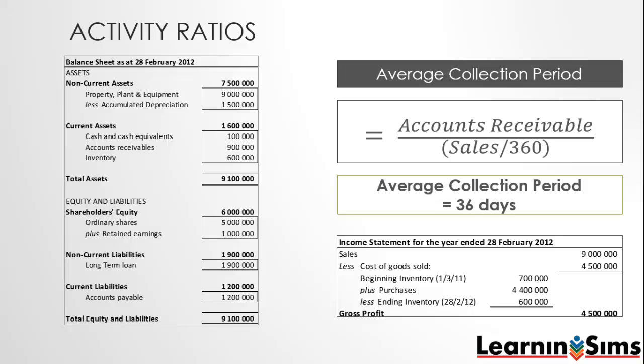This means that it takes the company on average 36 days to collect cash from its debtors. This value is useful when comparing it to the internal credit terms offered to debtors and the average payment period of the company.